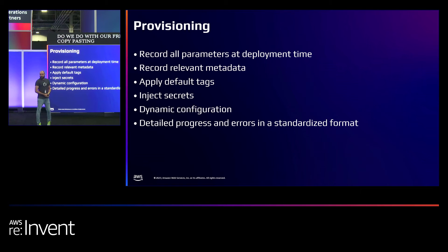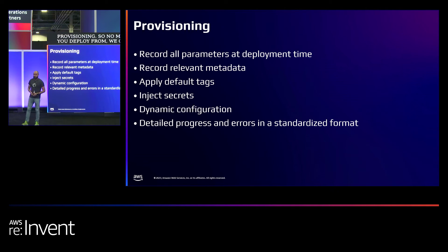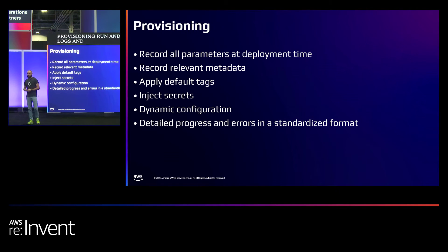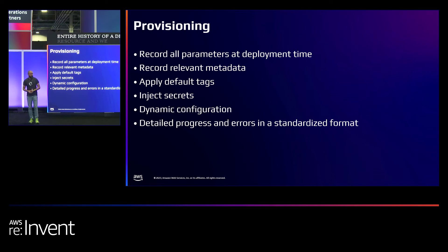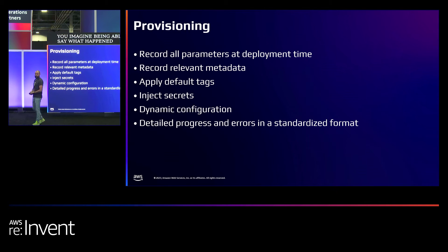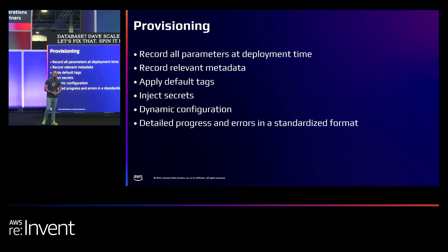So what do we do with our free time, not copy-pasting pipelines? We write software. We have a proxy — what we call an orchestrator — that sits in front of our provisioning. No matter where you deploy from, we capture who's requesting a change, why they're requesting a change, what values they used, the results of our provisioning run, and all of the logs and failures. Save all that to a database. We now have point-in-time snapshots of an entire history of a deployed resource, available in the exact same tool we used to provision. Can you imagine being able to say: what happened since last Thursday to this production database? Dave scaled it down — let's fix that, spin it back up in one tool.